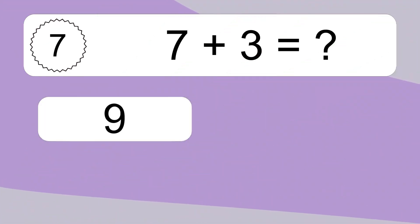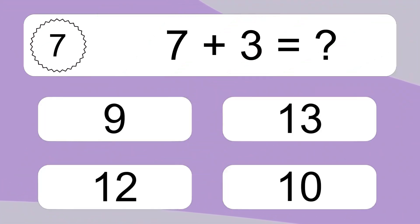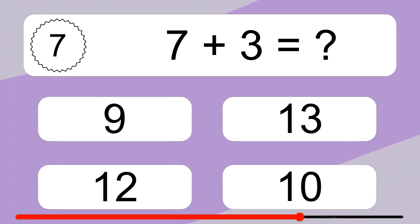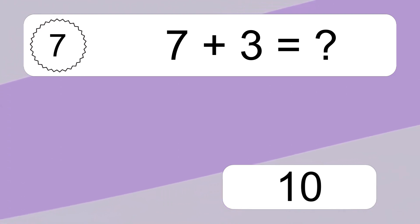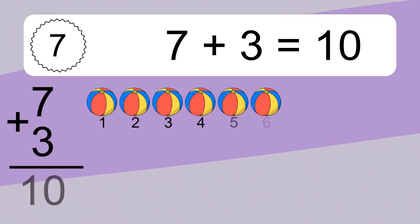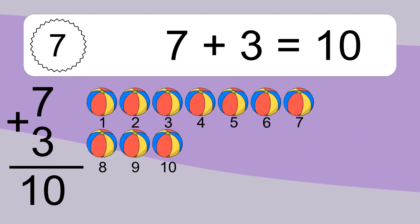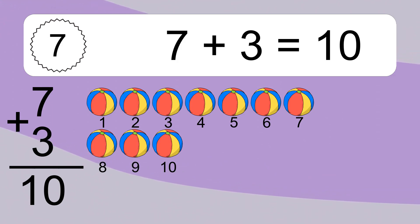7 plus 3 equals what? 7 plus 3 equals 10. Let's count it: 1, 2, 3, 4, 5, 6, 7, 8, 9, 10.